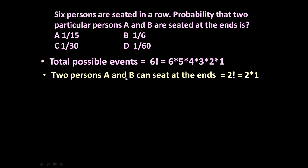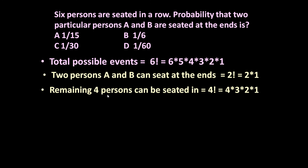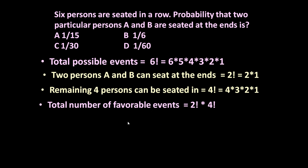Now the remaining 4 persons are left between A and B. When A is at one end and B is at the other end, these 4 can sit in factorial 4 ways. Remaining 4 persons can be seated in factorial 4 ways, that is 4 × 3 × 2 × 1. So total number of favorable events is factorial 2 × factorial 4.